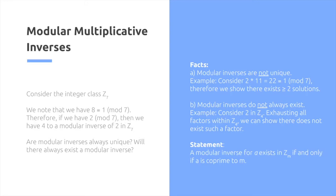A modular inverse for a exists in z of m if and only if a is co-prime to m. The proof is beyond the scope of this video, but feel free to check out the link in the description.